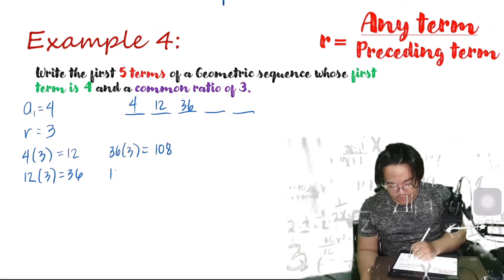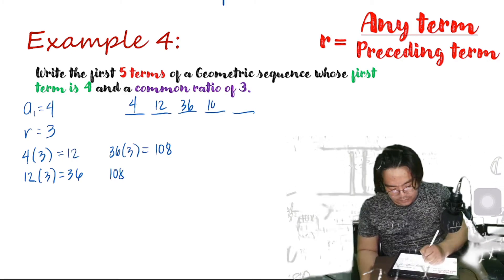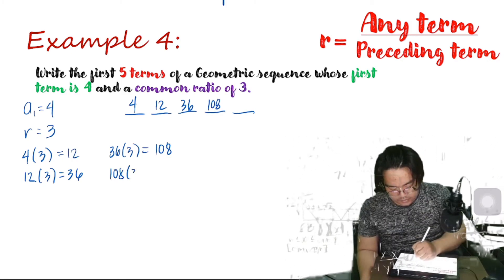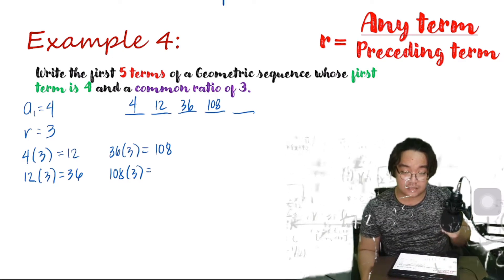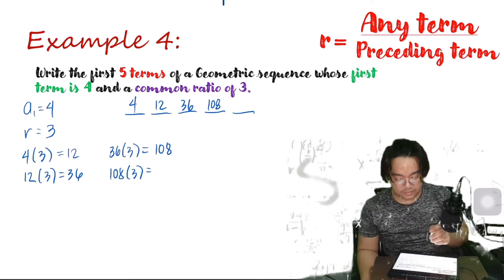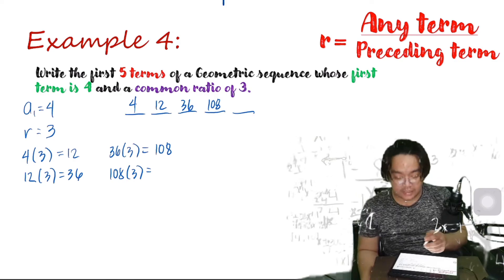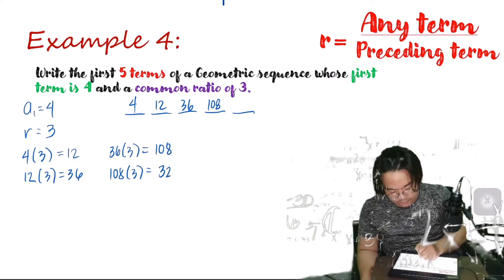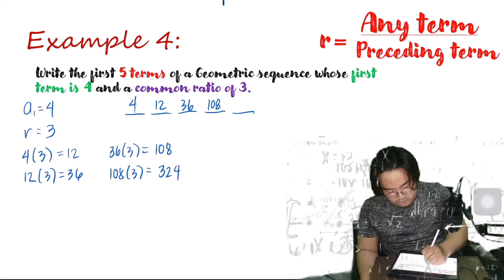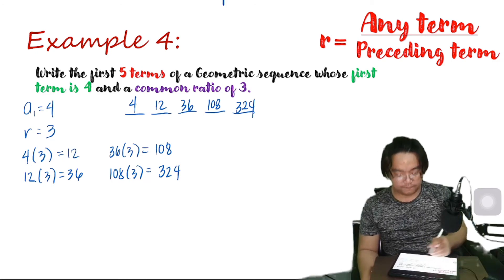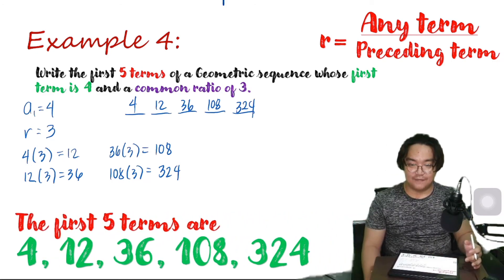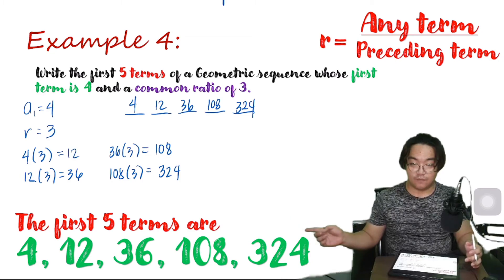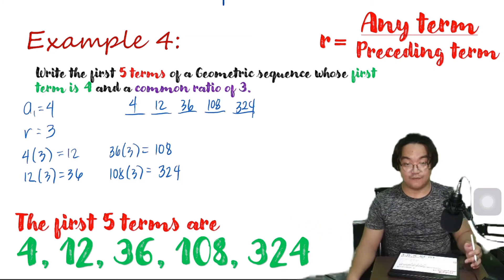So 108 is our fourth term. And 108 times 3 — same procedure — 100 times 3 is 300, and 8 times 3 is 24, so 300 plus 24 equals 324. Therefore, the first five terms are 4, 12, 36, 108, and 324.